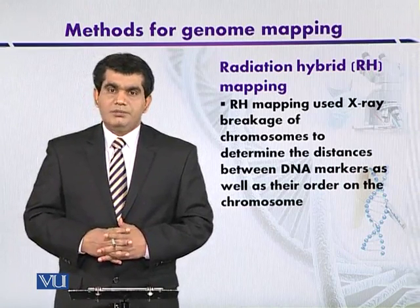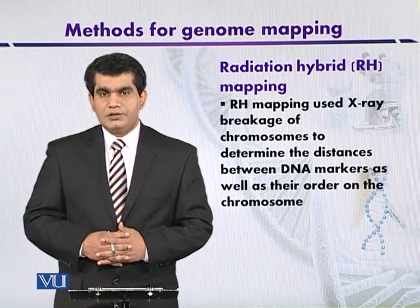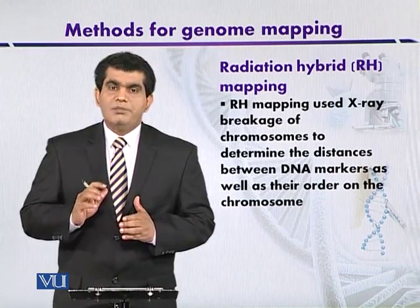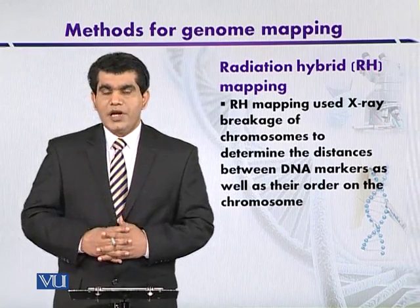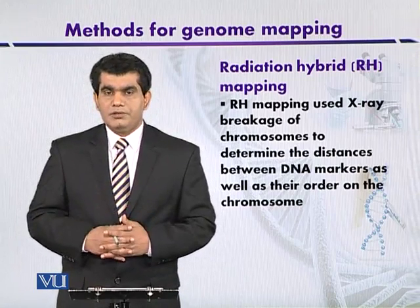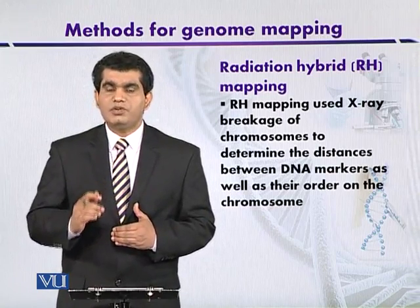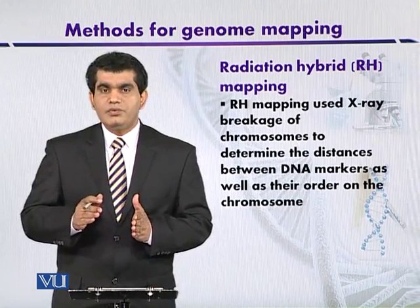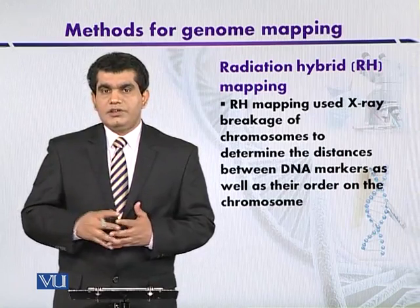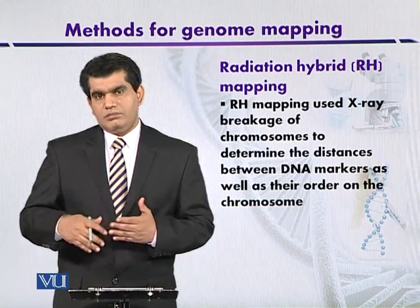This technique was developed in the 1970s by two scientists, Stephen Gauss and Henry Harris. They subjected mammalian cells to X-rays, which caused the fragmentation of the genomic DNA randomly. The irradiated cell that had been exposed to X-rays was then fused to a hamster cell.